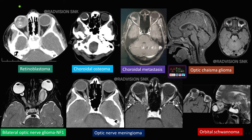Here there is a soft tissue density mass with calcifications — a case of retinoblastoma. Also shown are cases of choroidal osteoma and choroidal metastasis from breast carcinoma. This is a case of optic pathway glioma, commonly seen in the pediatric age group, with bilateral optic nerve gliomas classically seen in NF1.